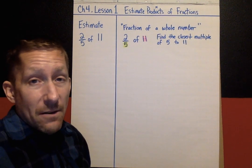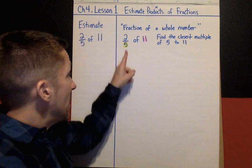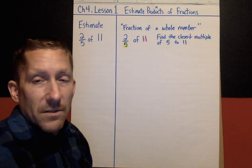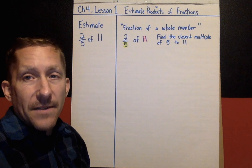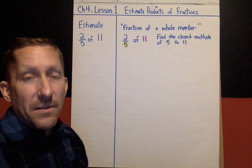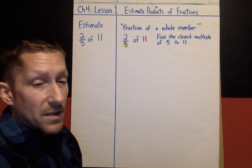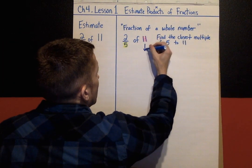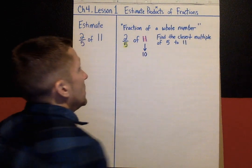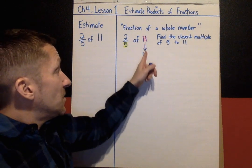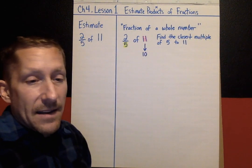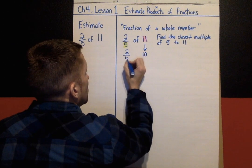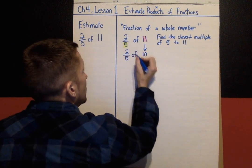I want to know how close we can get, skip counting by fives, to 11. Skip count by fives: five, ten, fifteen, twenty. The closest number we can get to 11 is ten. So I'm going to change this to a ten, and now I'm going to work with this problem: two-fifths of ten.